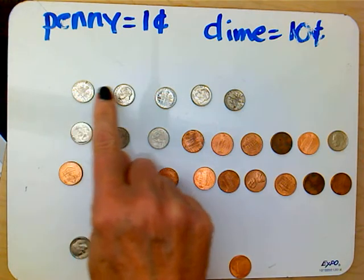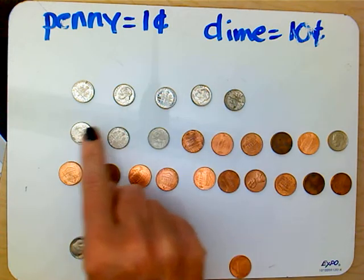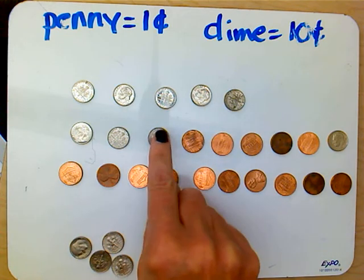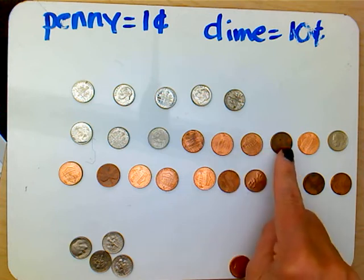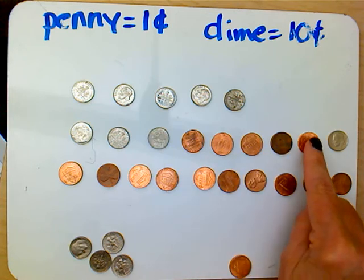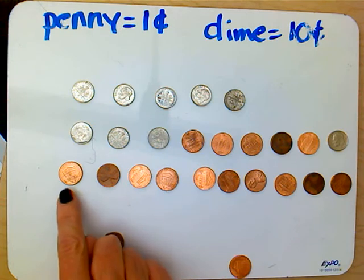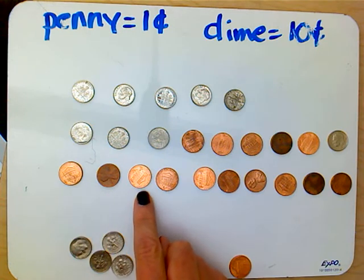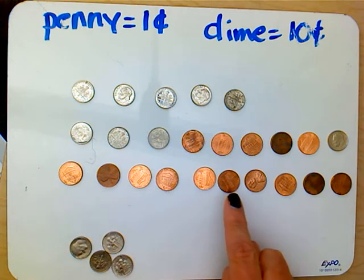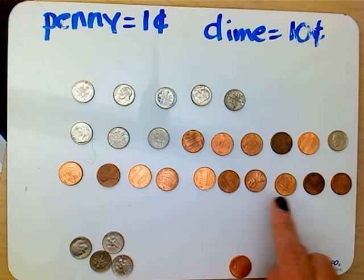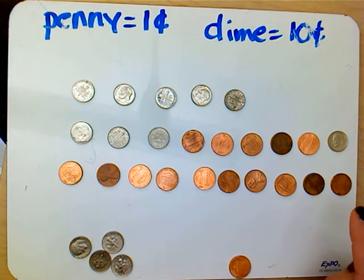10, 20, 30, 40, 50, 60, 70, 80, 81, 82, 83, 84, 85 — counting up 10 to 95, 96, 97, 98, 99, 100, 101, 102, 103, 104, 105.